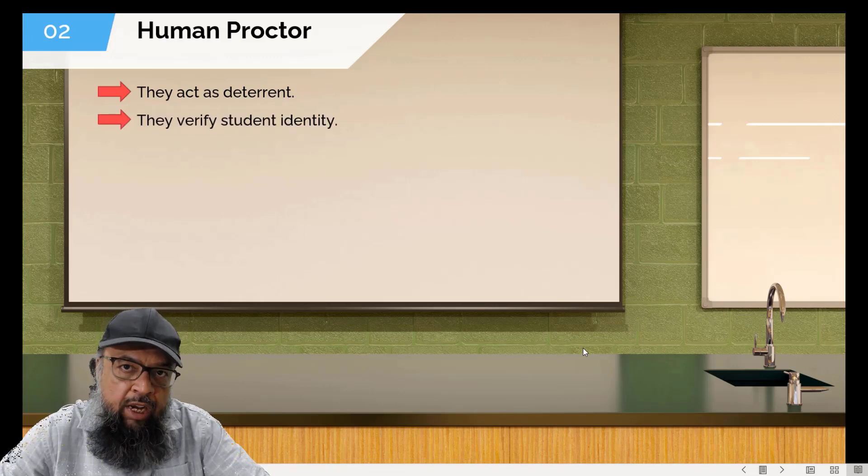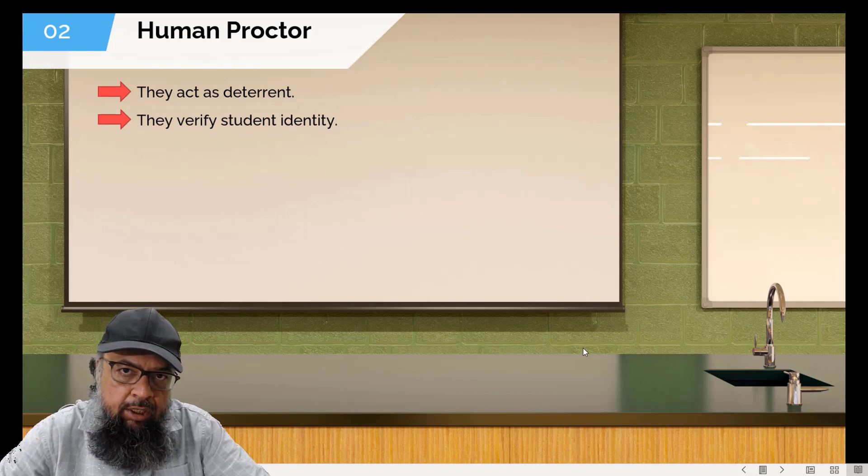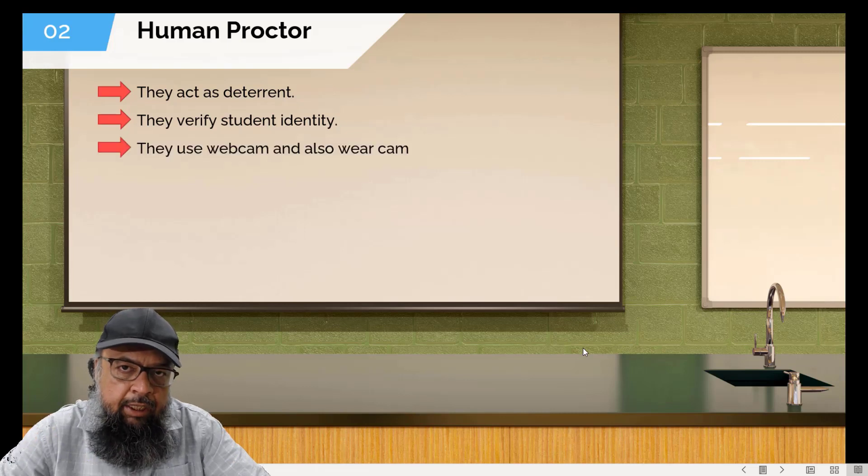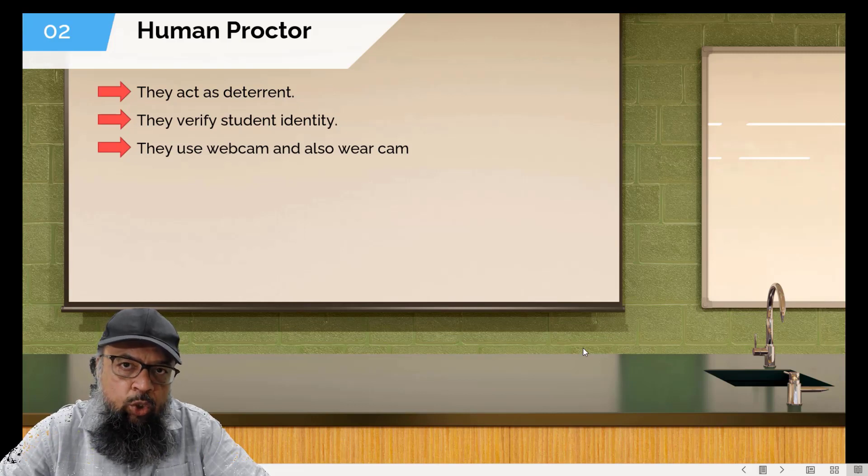Then they also verify the identity of the student. They ask students to show their identity cards, and they try to verify with the information they have. And they also use two cameras instead of one: one is the webcam focused on the face of the student, and another camera which is focused on the environment of the student in such a way that both the screen and most part of the environment are visible.